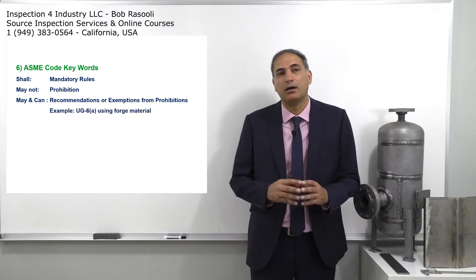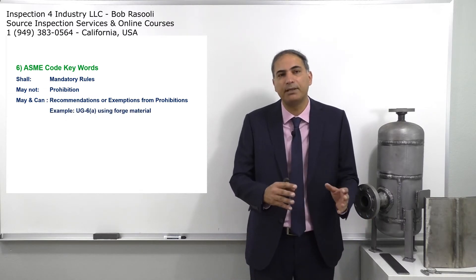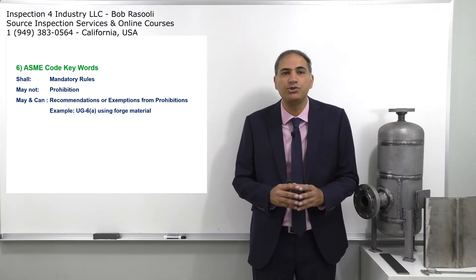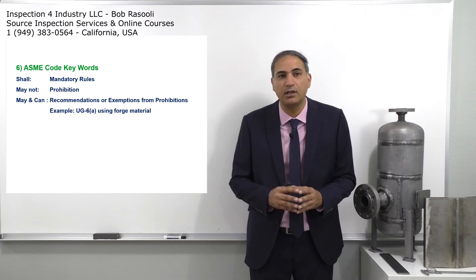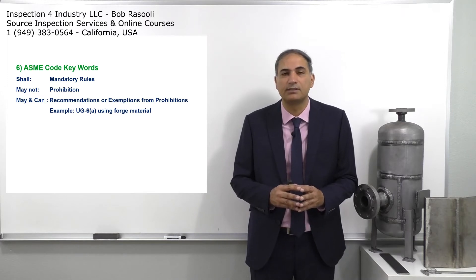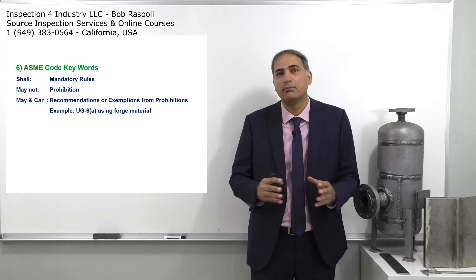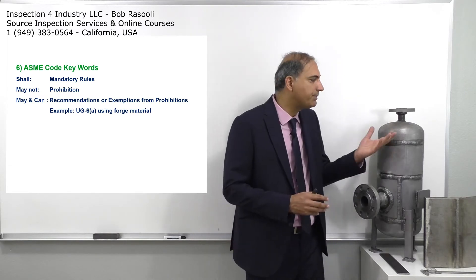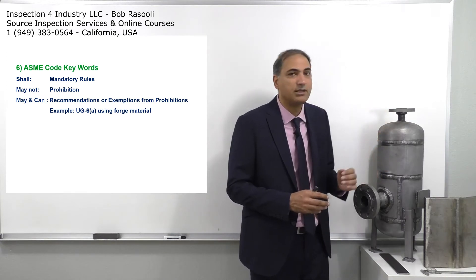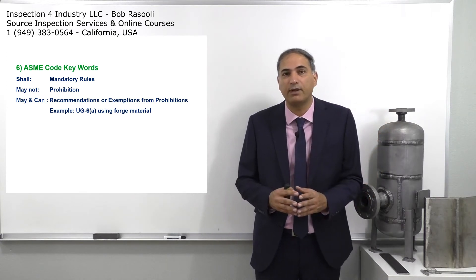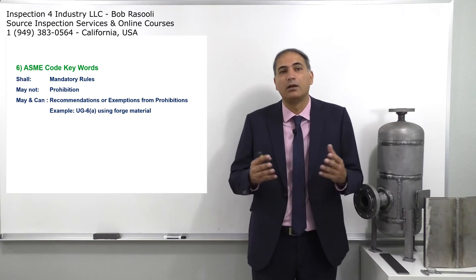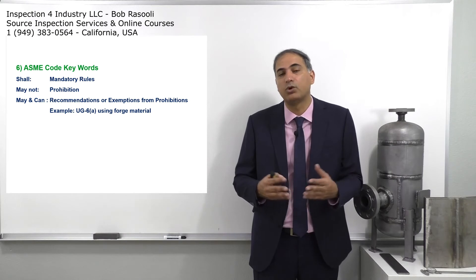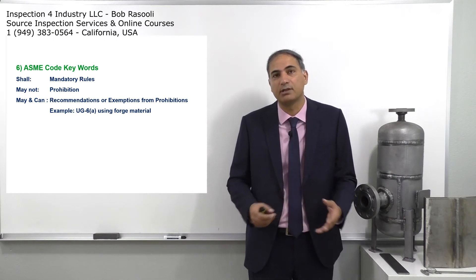Here's an example: in clause UG-6A, using forged material — it says the manufacturer 'may use' forged material. Like in this pressure vessel, you can see this flange; this flange is SA-105, which is a forged material. The word 'may use' indicates it's a recommendation, not a mandatory requirement.